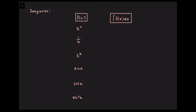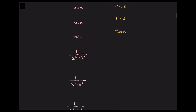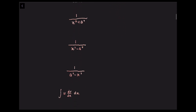Let us now look at integration. Integrating x to the power of n, we have x to the n plus 1 over n plus 1. Integrating 1 over x equals ln x. Integrating e to the x, we have e to the x. Integrating sin x, we have negative cos x. Integrating cos x, we get sin x. Integrating sec squared x, we get tan x. Integrating 1 over x squared plus a squared, we have 1 over a times inverse tan of x over a.